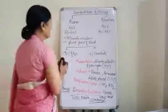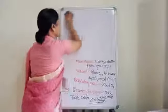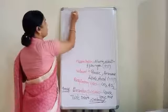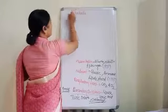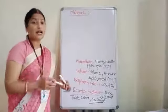The next composition of plasma is minerals. There are many minerals required by the body. The important ones are iron, calcium, magnesium, sodium, potassium ion, and phosphate ion. These minerals are required by the body, and their total composition in plasma is 1%.